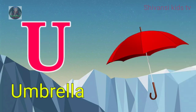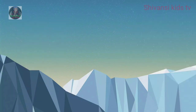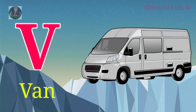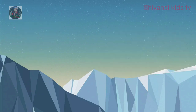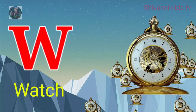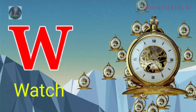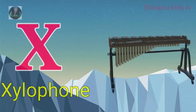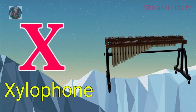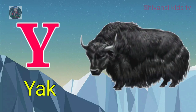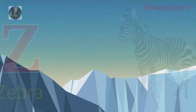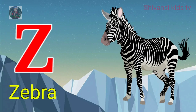U for umbrella, B for man, W for watch, X for gelo phone, Y for yard, Z for zebra.